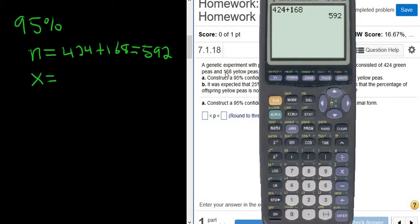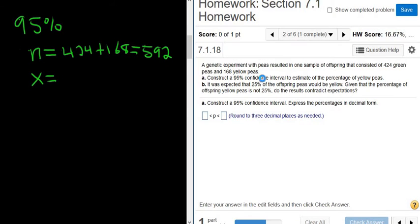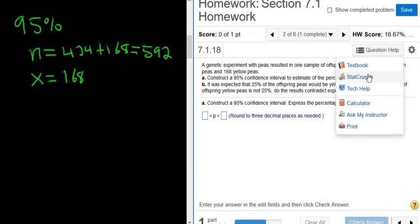Now we need the total number of successes. We get that by looking at the question. In this question, we want to estimate the percentage of all yellow peas, so the total number of yellow peas is our success, so 168. Now we're ready to go, ready to find a range of values on our percentage.